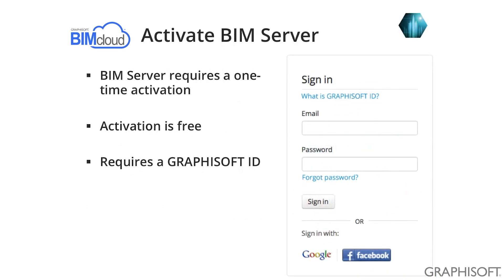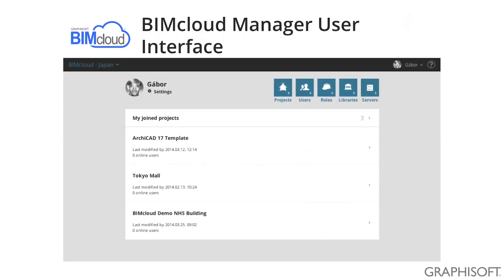BIM Server is free. The only requirement is that you activate it with a GRAPHISOFT ID, which is also free. You can also use your Facebook or Google login to activate the BIM Server. When the installation is finished, you will be able to access the BIM Server Manager user interface from the browser. Just enter the same URL that you used to access the server from ARCHICAD, and you will reach a similar user interface as you see here.